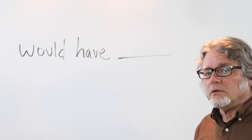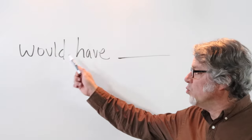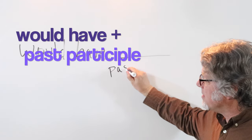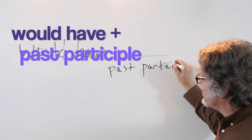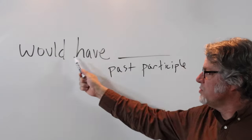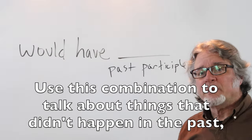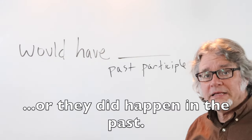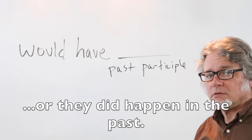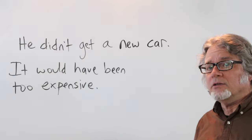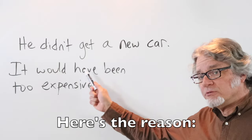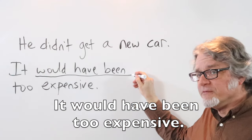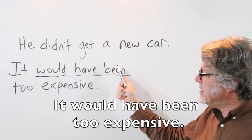In this video I'll show you ways to use 'would have.' After 'have' is the past participle. Use this combination to talk about things that didn't happen in the past, or things that did happen. He didn't get a new car, and here's the reason: it would have been too expensive. Here's the verb 'be' in the form of a past participle.